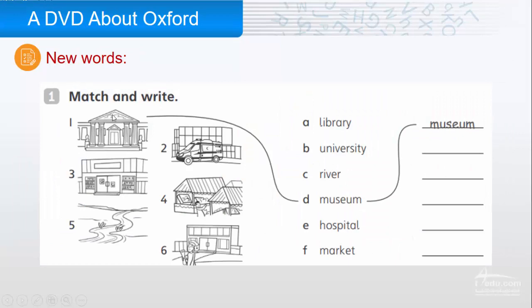Match and write. For example, picture number one is museum. One is museum. Number two. What is number two? It's a hospital. Hospital. Three. Library. Library. Library. Number four. Market. Market. Market. Five. River. River. River. Six. University. University. University.